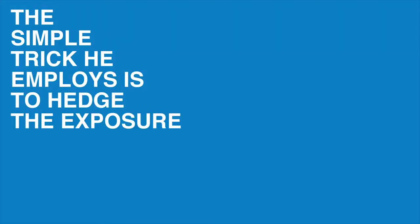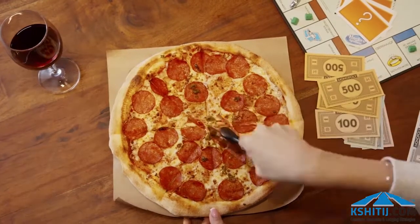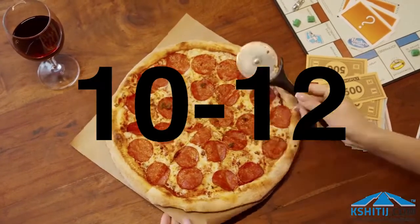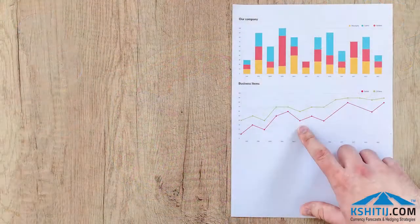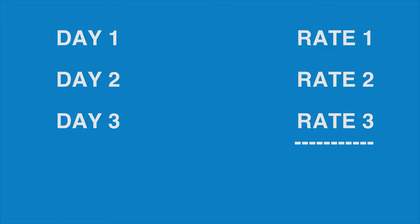However, the seasoned risk manager knows that it is not possible to strike the tops and bottoms of the market. The simple trick he employs is to hedge the exposure in parts instead of as a whole. He breaks up the exposure into 3 parts or 4 parts or even 10 to 12 parts, and then proceeds to hedge each part at different rates and at different times in the market. Since the hedges are taken at regular intervals over time, the risk manager is able to achieve a decent average rate.